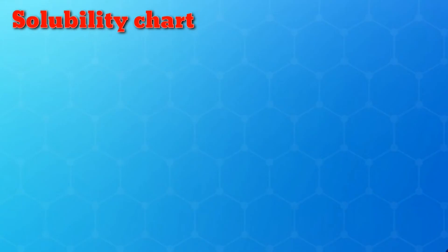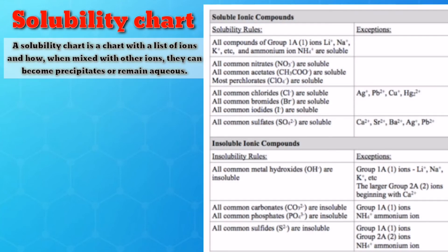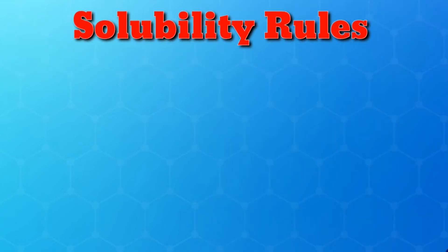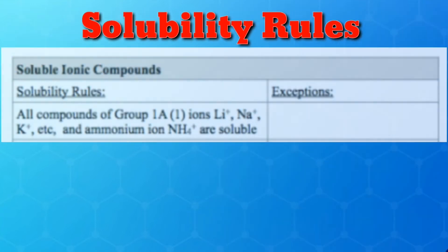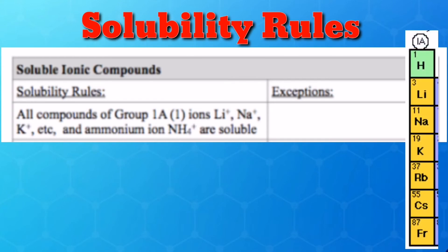A solubility chart is a chart with a list of ions and how they can become a precipitate or remain aqueous. The following are the solubility rules for common ionic solids. If two rules appear to contradict each other, the preceding rule takes precedence. Rule 1: All compounds of Group 1A elements are soluble. Also, compounds containing the ammonium ion are soluble.